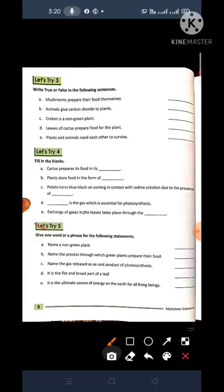Now come to the Let's try Five. Give one word or a phrase for the following statements. A. Name a non green plant. Non green plant is a Croton. So in A what you will write? C-R-O-T-O-N. What you will write here? C-R-O-T-O-N Croton.